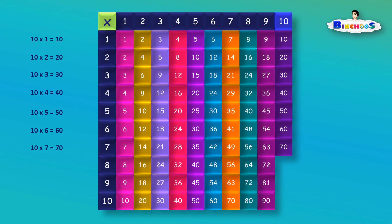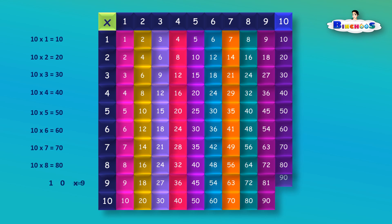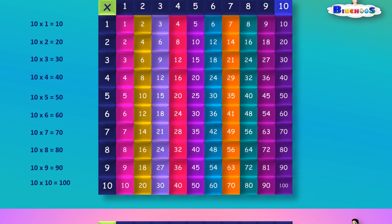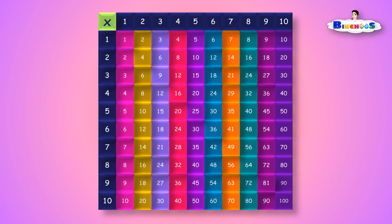10 times 7 is equal to 70. 10 times 8 is equal to 80. 10 times 9 is equal to 90. 10 times 10 is equal to 100.